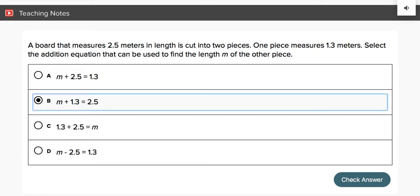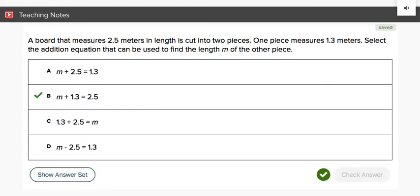Now, let's check the answer. We're saying that m, which is our variable, plus one piece, which is 1.3 meters, is equal to the total of 2.5 meters. Let's check. Excellent.